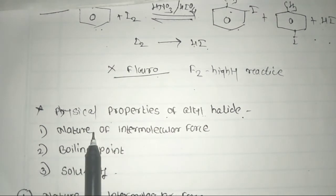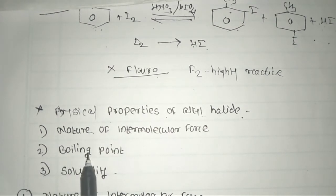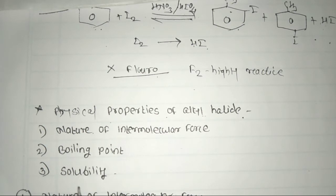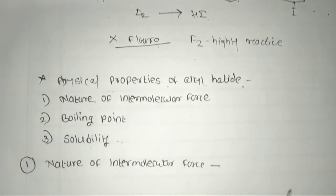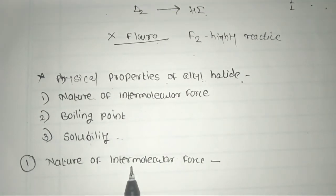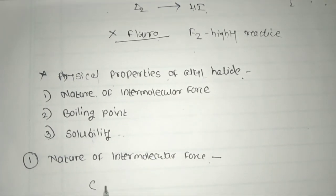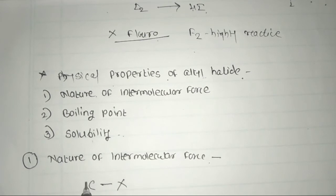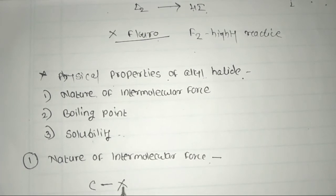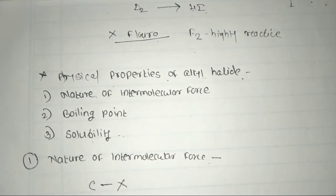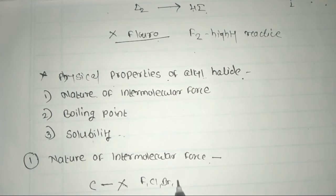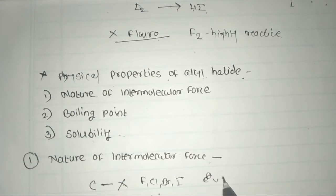Next, we look at the physical properties of alkyl halides. The physical properties covered include the nature of intermolecular forces, boiling point, and solubility of alkyl halides and aryl halides. The first physical property is the nature of intermolecular forces. In alkyl halides, the carbon is bonded to a halogen atom — fluorine, chlorine, bromine, or iodine — which are more electronegative than carbon.